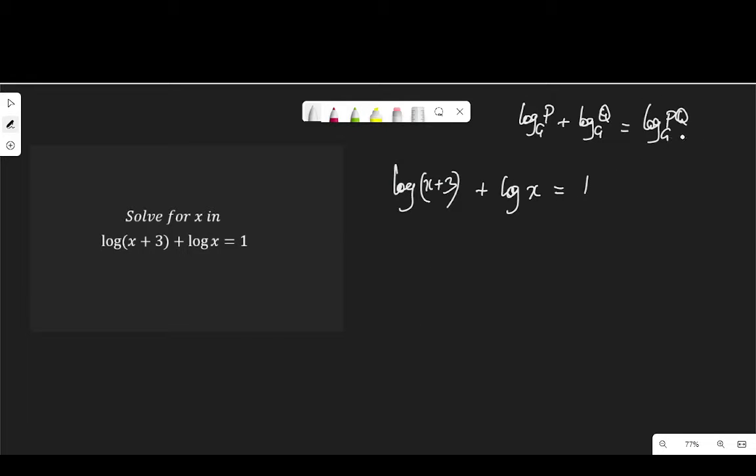So if I apply this law in our question, I am going to have log x multiplied by x plus 3. So let me put the x outside and x plus 3 equal to 1. And like I said earlier, when we write log reading without a base, the base is 10. So I am going to put this as 10.